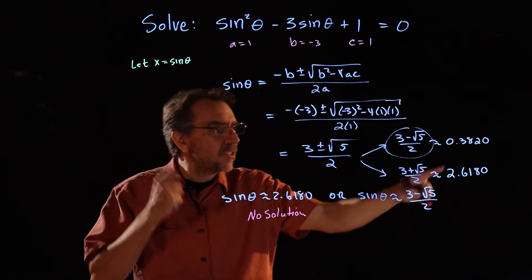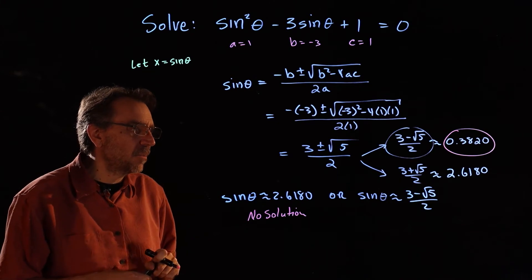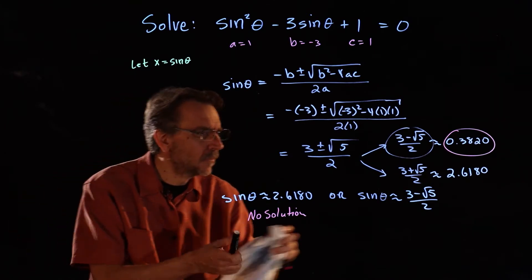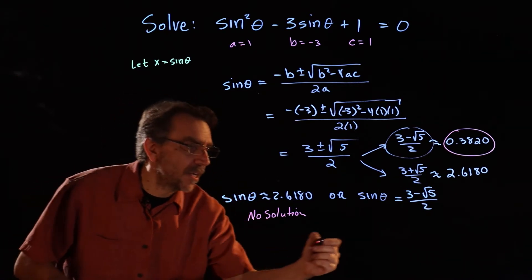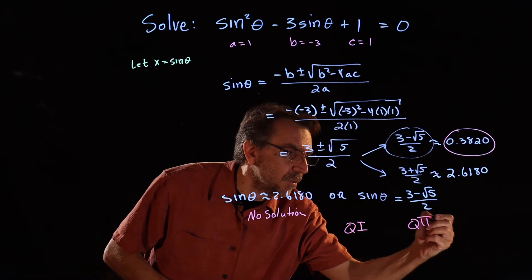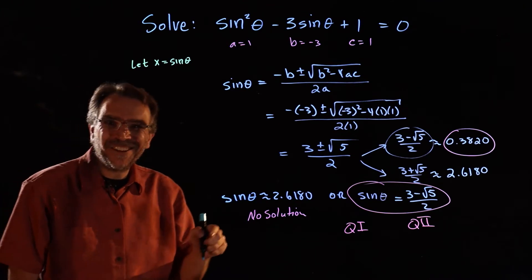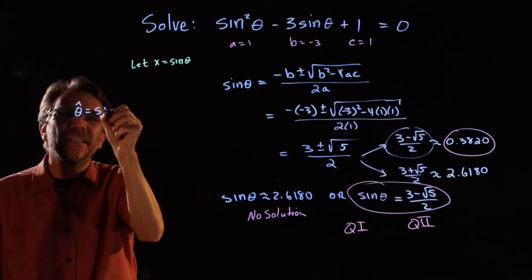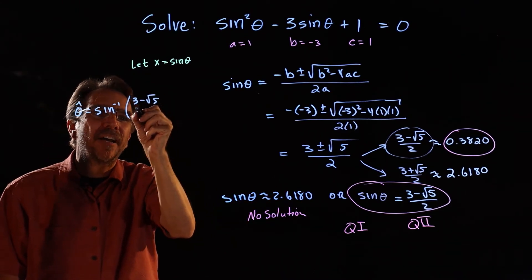But this one, 0.3820, is going to have two solutions. Notice it's positive, so sine is positive in two quadrants — quadrant 1 and quadrant 2. I'll use the exact value, so sine theta equals 3 minus square root of 5 over 2. To get the reference angle, theta-hat equals sine inverse of 3 minus square root of 5 over 2.